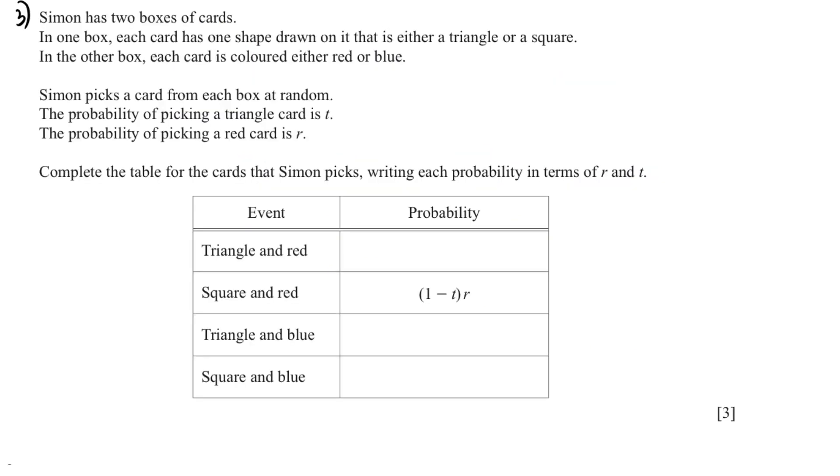The next question. Simon has two boxes of cards. In one box, each card has one shape drawn on it that is either a triangle or a square. In the other box, each card is colored either red or blue. Simon picks a card from each box at random.